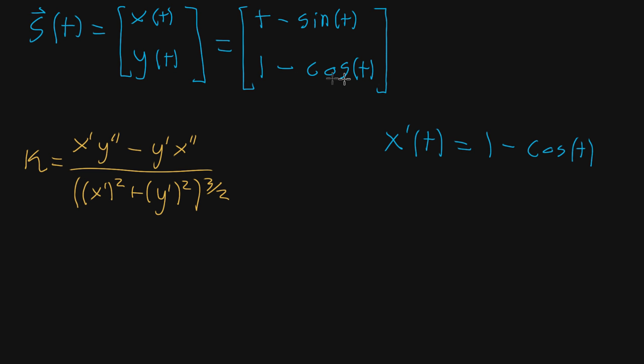And the derivative of the y component of one minus cosine t, y prime of t, is gonna be, derivative of cosine is negative sine, so negative derivative of that is sine, and that one goes to a constant.